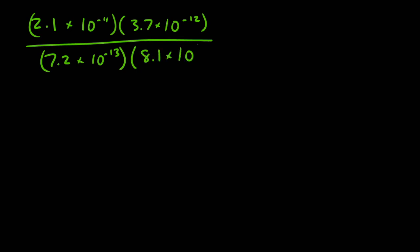In our second example, we have 2.1 times 10 to the negative 11th times 3.7 times 10 to the negative 12th, all over 7.2 times 10 to the negative 13th times 8.1 times 10 to the negative 14th. Now problems set up like this sometimes challenge introductory students. So I'd like to set this problem aside for a moment and tackle one that looks much simpler.